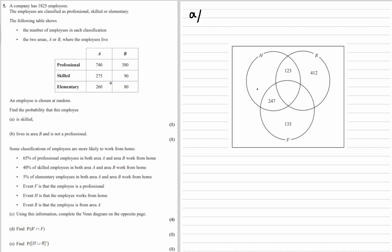So what's the probability? How many are skilled? So 275 and 90. So 365 out of the total, 1,825.